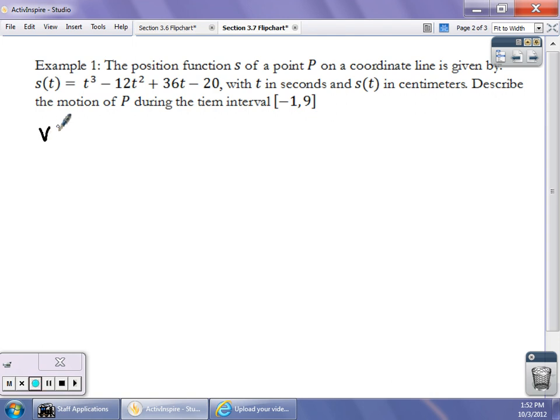So the velocity V of T is given as the derivative of the position function, which is going to be 3T squared minus 24T plus 36. And then I can also identify what the acceleration is. The acceleration of the function is going to be 6T minus 24.